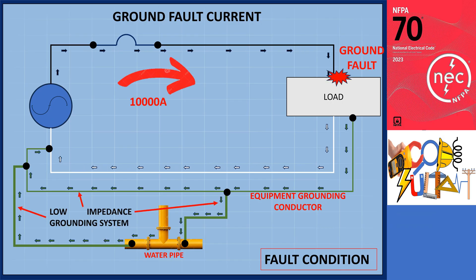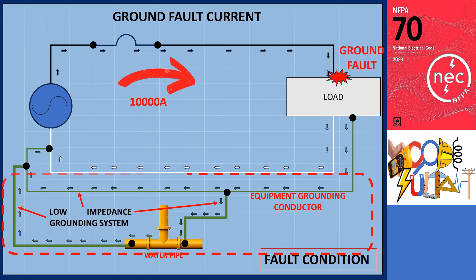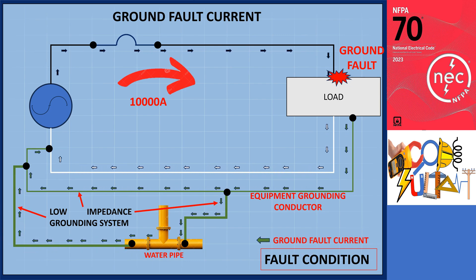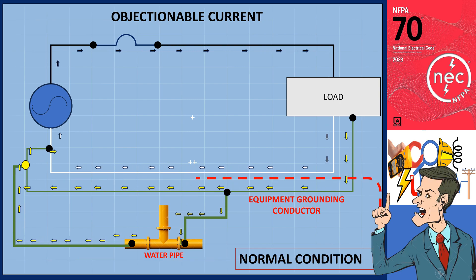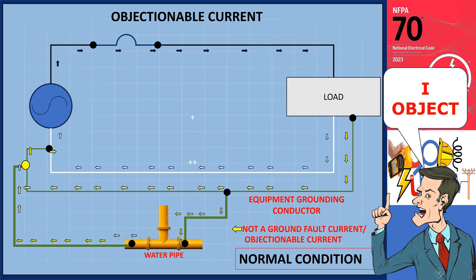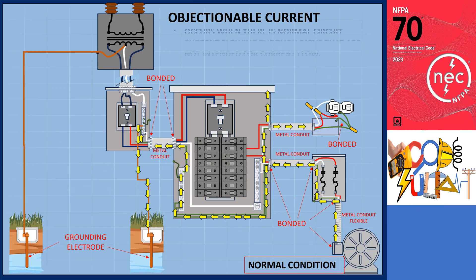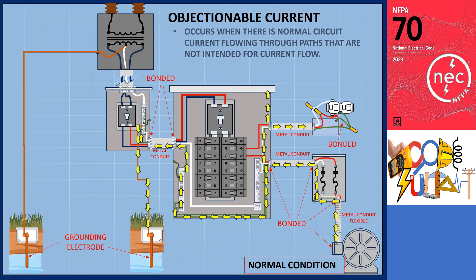During ground fault conditions, current flows through the equipment grounding conductor, which is known as ground fault current. However, what happens when there is current flowing through this path in the absence of a ground fault or a normal operating condition? This is what we refer to as an objectionable current. Objectionable current occurs when there is normal circuit current flowing through paths that are not intended for current flow, such as the equipment grounding conductor, grounding electrode conductor, metallic enclosure, and others.